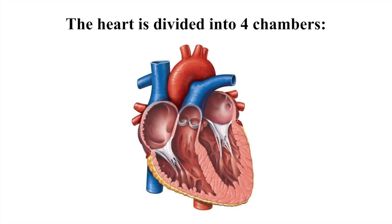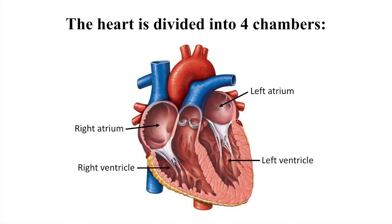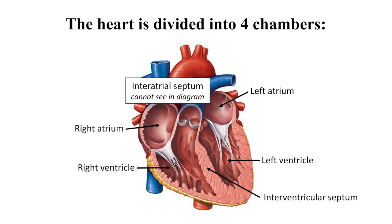The heart is divided into four chambers: two superior atria and two inferior ventricles. The septum that divides the heart longitudinally is referred to as the interatrial septum, where it separates the atria, and the interventricular septum, where it separates the ventricles. The ventricles force blood out of the heart into the large arteries that emerge from its base.